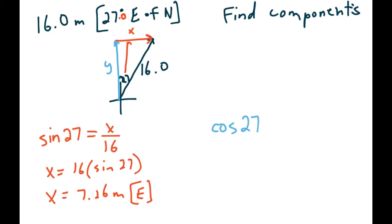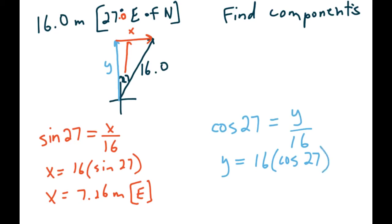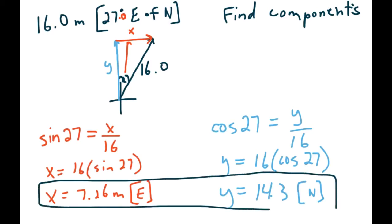Then we do the same for the vertical component. We have the adjacent side so we use cosine. Cos 27 equals y over 16 - cross multiply. 16 times cos 27 gives us 14.26, rounded to 3 sig digs that's 14.3. That one is going vertically and we're heading north, so we'd write it as north. Those are the two components - do the sine and cosine for each and make sure you have the east/west and north/south directions sorted out.